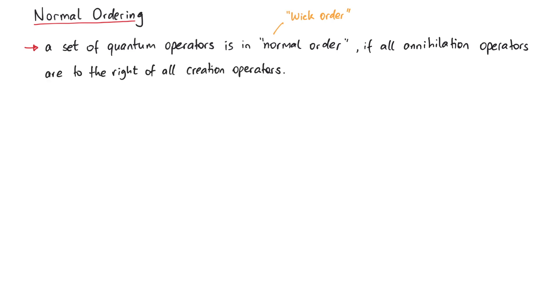In this video, we will discuss the normal ordering of quantum operators for bosons as well as for fermions. In short, a set of quantum operators is in normal order, or Wick order, if all annihilation operators are to the right of all creation operators.